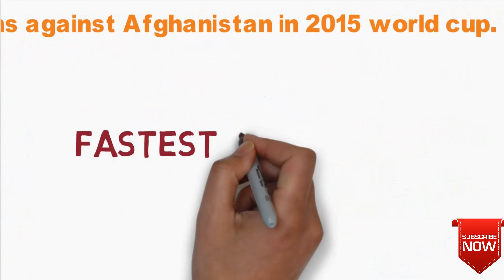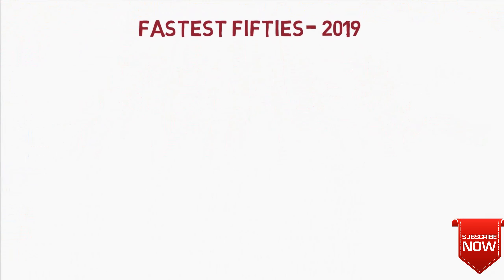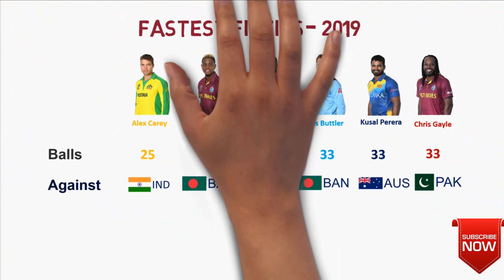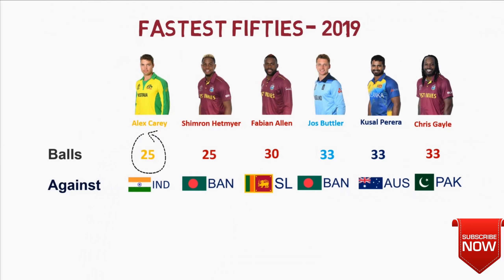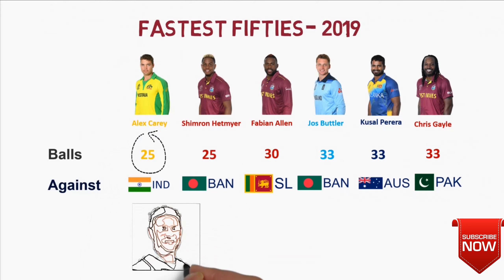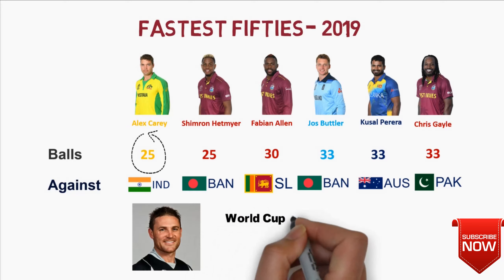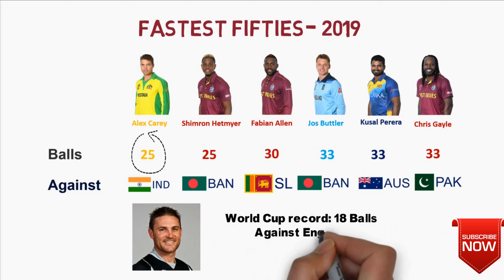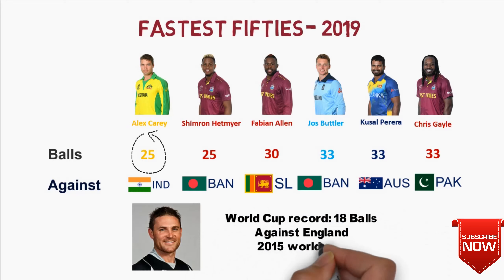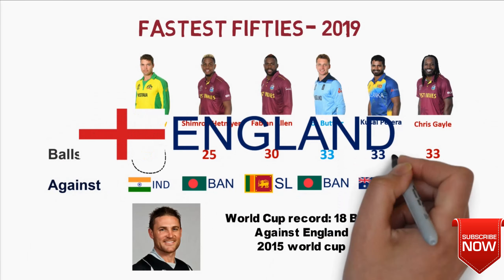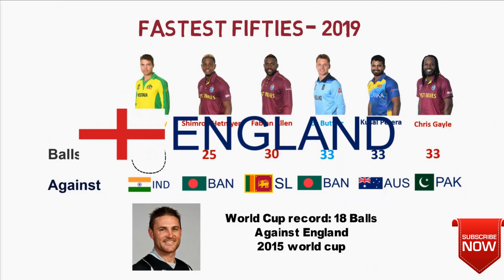The next category is Fastest 50. Alex Carey tops the 2019 list, scoring his 50 in just 25 balls against India. The fastest 50 in World Cup history belongs to Brendan McCullum with 18 balls, also made against England in the 2015 World Cup. Interestingly, both the fastest 50 and fastest 100 in World Cup history were made against England.